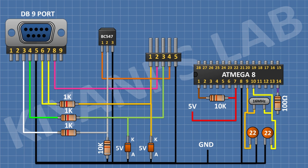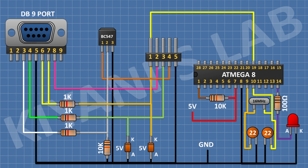Connect a 100 ohm resistor with one pin to pin 14 of the microcontroller. Connect an LED with its anode to the remaining pin of the 100 ohm resistor and its cathode to ground. Now connect the programmer: ground pin to ground, SCK to pin 19, MISO to pin 18, MOSI to pin 17, and the reset pin to pin 1 of the microcontroller.